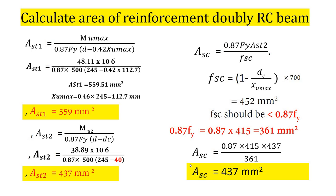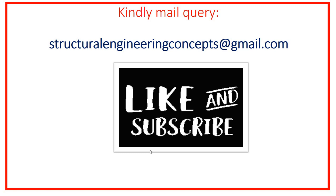We have now calculated the area of reinforcement for both the tension side and the compression side. The total tension reinforcement equals Ast1 plus Ast2, and the compression reinforcement is Asc. I hope this is clear to you, dear students. If you have any doubt or question, you can email me or leave a comment. Please don't forget to like, share, and subscribe. Thank you for watching.